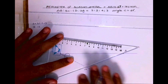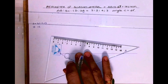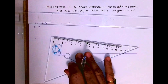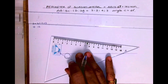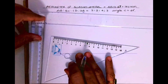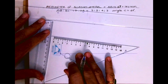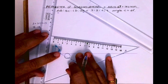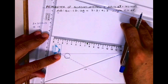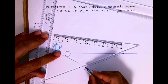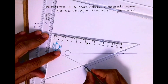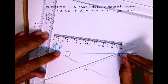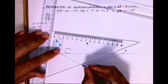Join A to 12 and keep a scale like this. Then you slide your set square. By this way you will divide line AA into 12 equal parts.